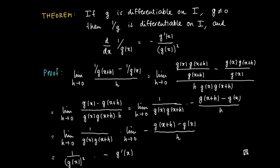So this shows two things. One is that 1 over g is differentiable. And secondly, that we may calculate the derivative of 1 over g as minus the derivative divided by the function squared, the function value squared.